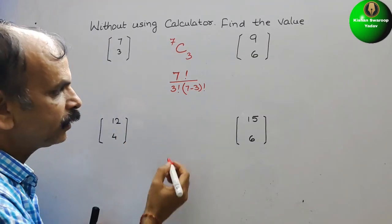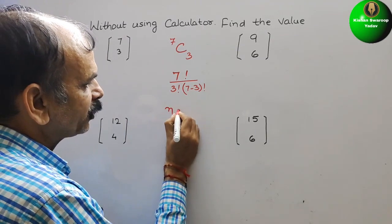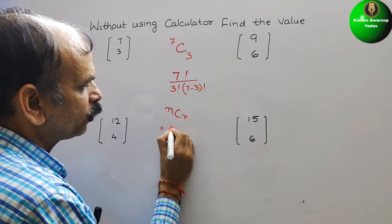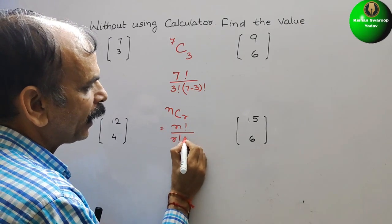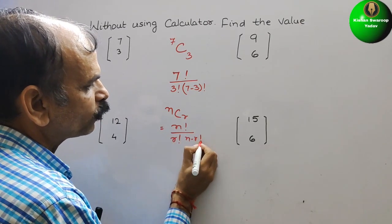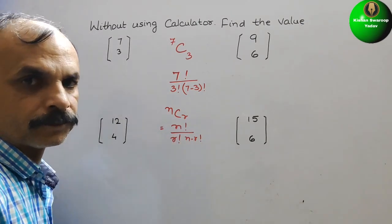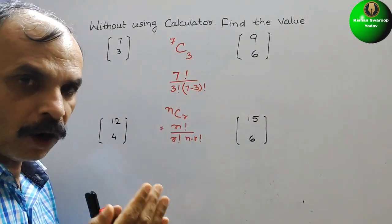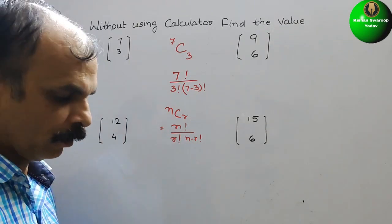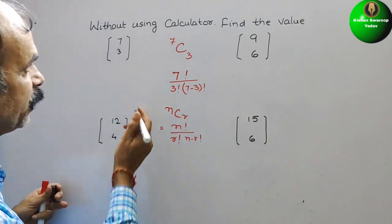Formula is what? I will write here. That is nothing but nCr that is equal to n factorial by r factorial and n minus r factorial. Now, so you can go for this also or the shortcut method is what? So now you can see here.